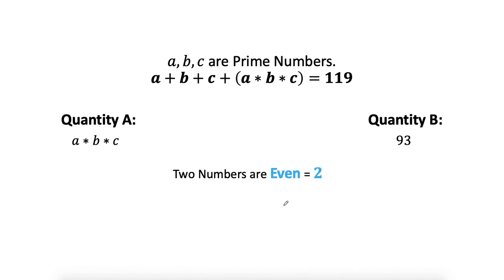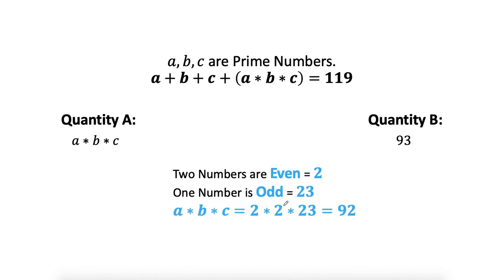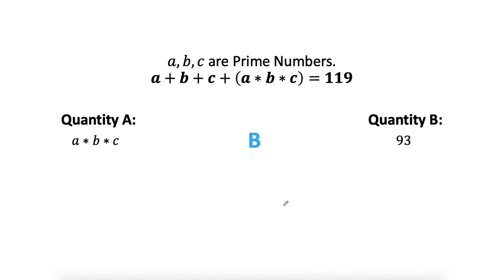We now know we have two even prime numbers (both 2) and one odd prime number (23). It doesn't matter which of a, b, c takes the odd value since we are multiplying all three together. So a times b times c equals 2 times 2 times 23, which equals 92. Therefore the answer is option B. This generic approach lets you solve the problem very quickly, unlike assuming values which is time-consuming. I hope you found this video helpful — let me know any doubts in the comments and hope to see you in the next video. Thank you.